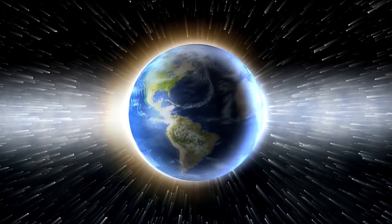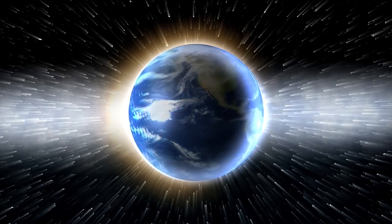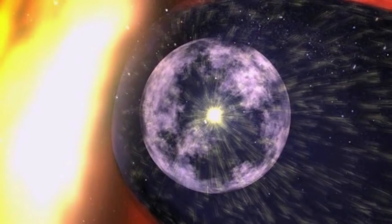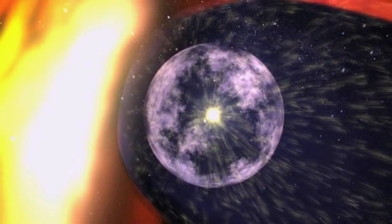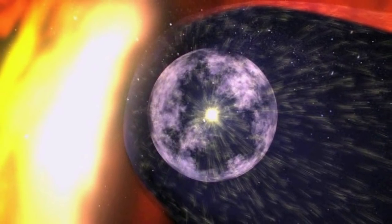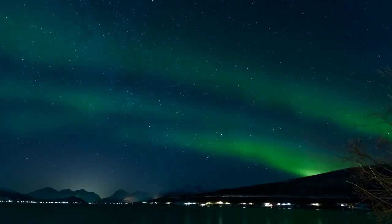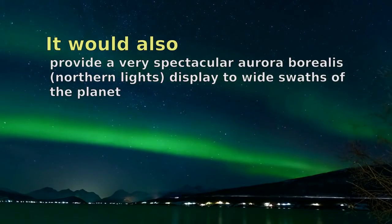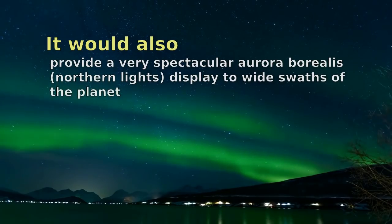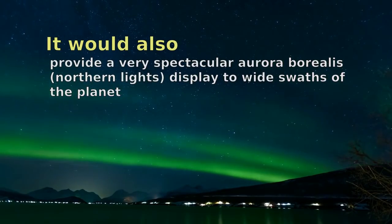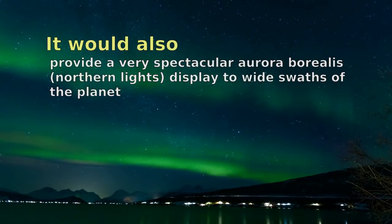If that's not confusing enough, there's evidence that the field strength hardly changed at all during other reversals. Even if it did virtually disappear briefly though, the interaction between solar particles and the Earth's atmosphere would produce magnetism of its own. It would create kind of a temporary self-shielding effect that would likely last long enough to let the big boy magnetic field get its house in order and start protecting the Earth again.